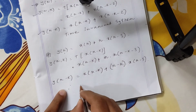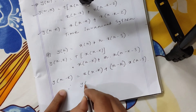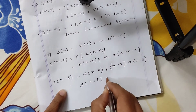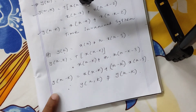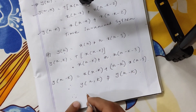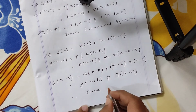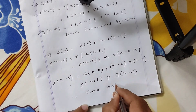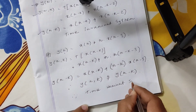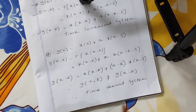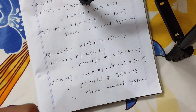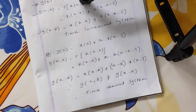So we can write that y[n,k] is not equal to y[n-k]. So this system is a time-variant system. This is how we can determine whether a given system is time-variant or time-invariant.